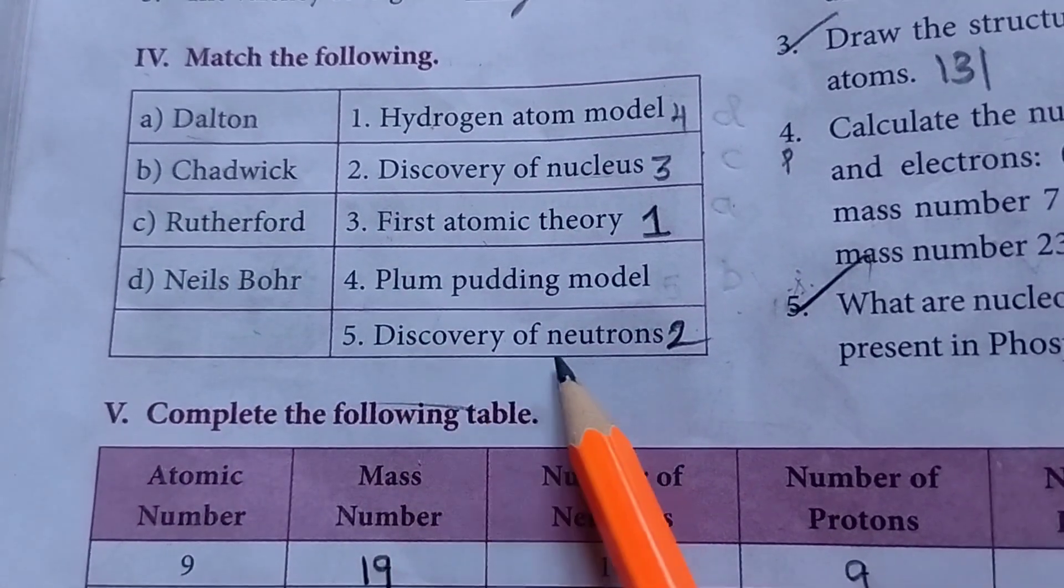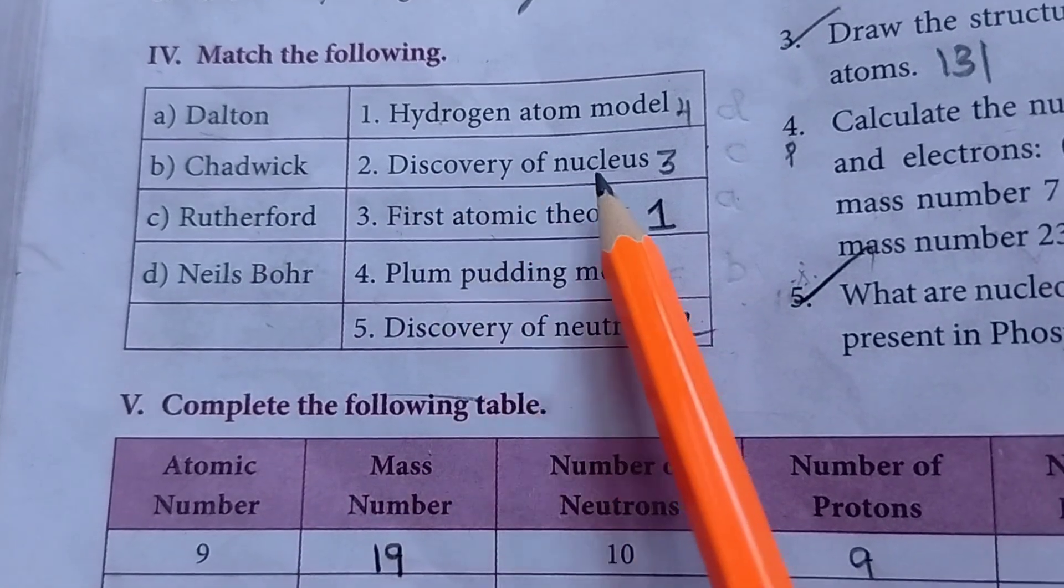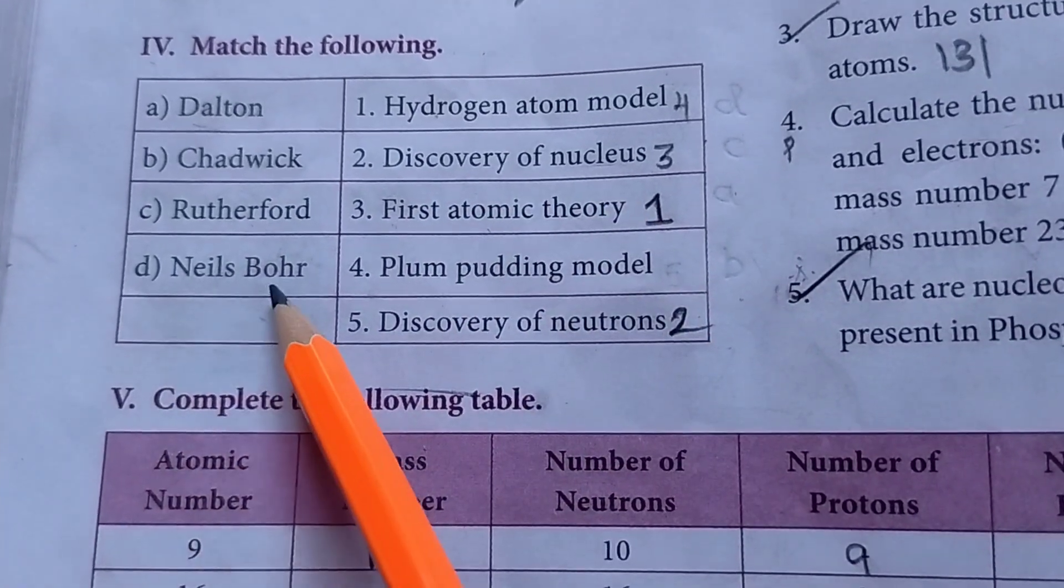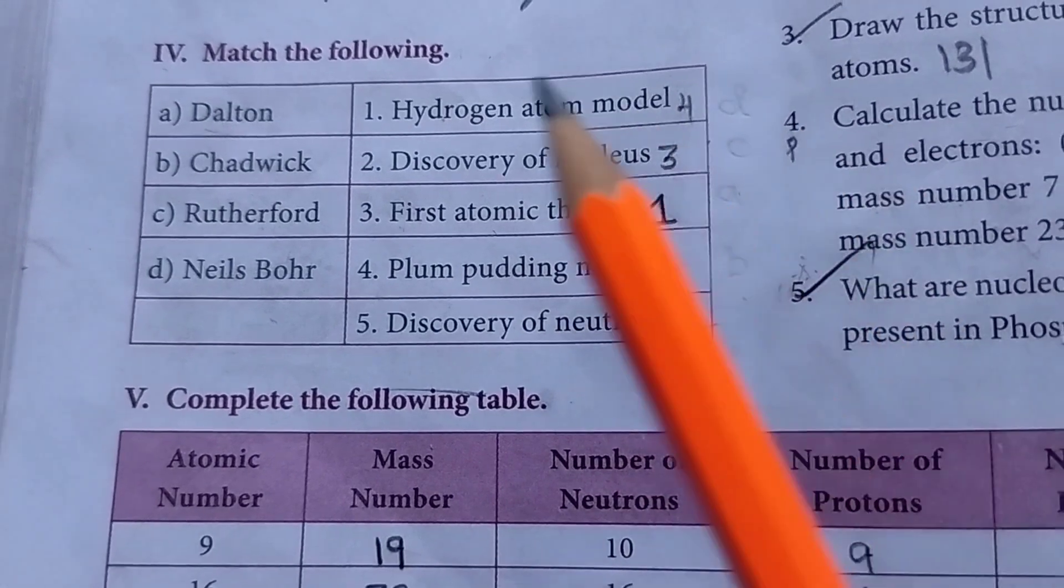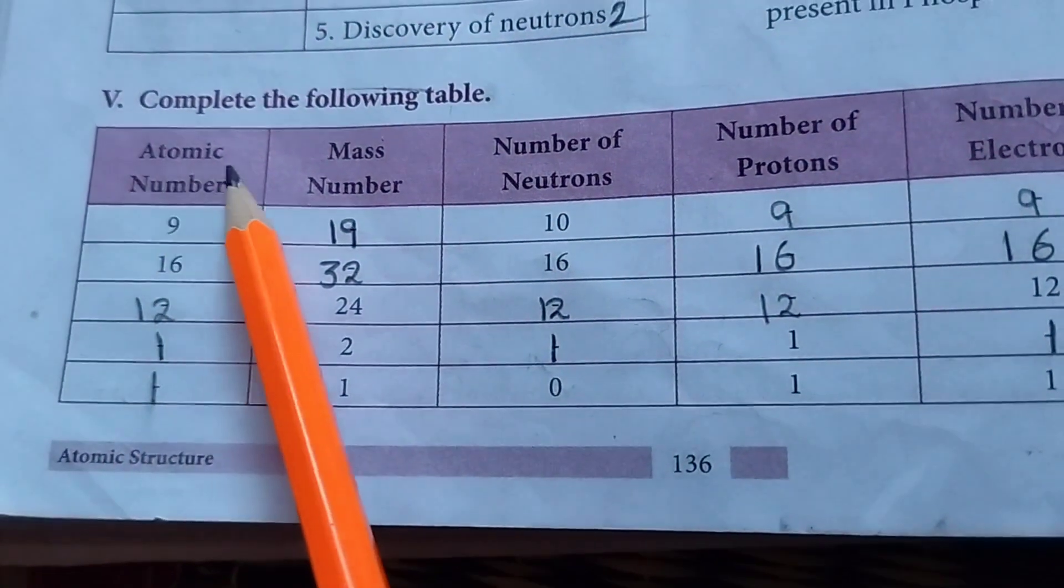Chadwick discovery of neutrons. Rutherford discovery of nucleus. Niels Bohr hydrogen atom model. Then fifth Roman letter. Complete the following table.